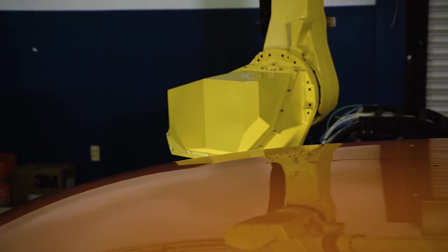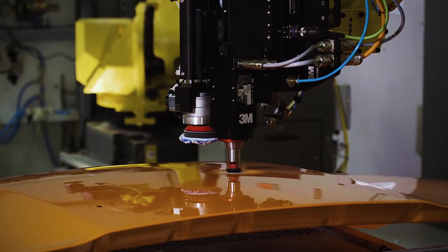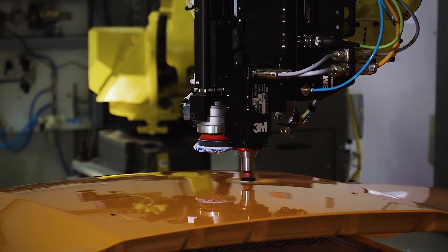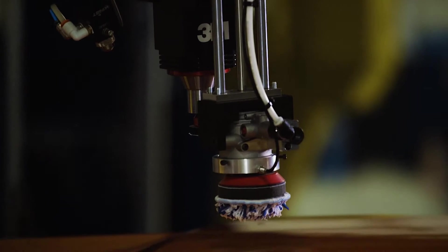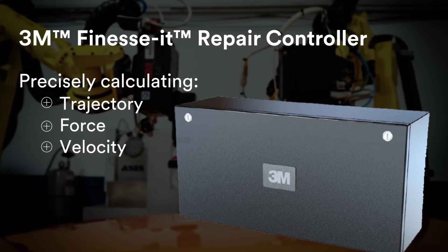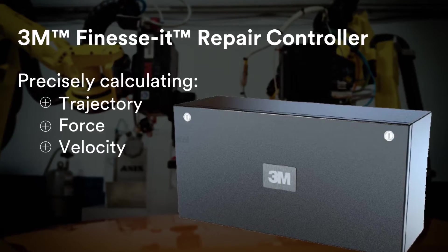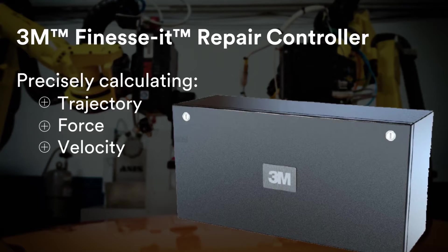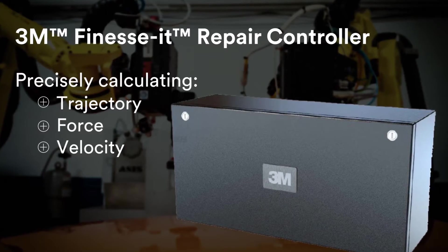Next, the vehicle moves to the sanding and polishing steps. The sander and buffer follow programmed repair strategies that are based on 3M's extensive application engineering expertise. The 3M Finesse-it paint repair controller, the brains behind the system, delivers the appropriate repair strategy for each defect, precisely calculating the trajectory, force, and velocity for end-of-arm tools.